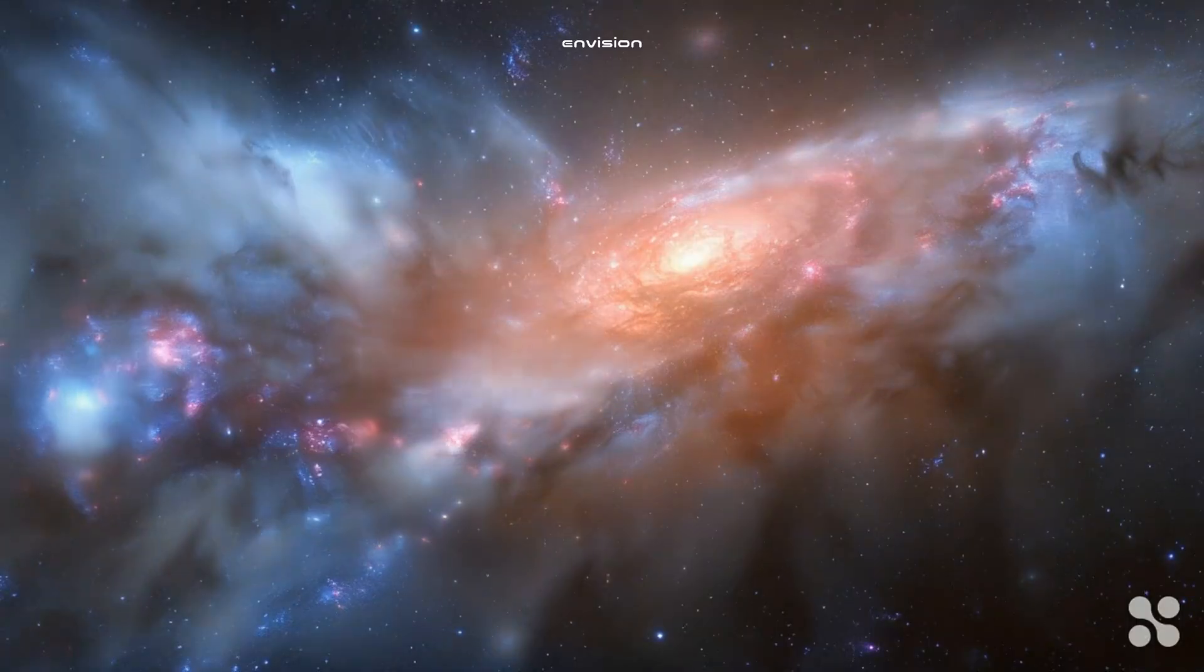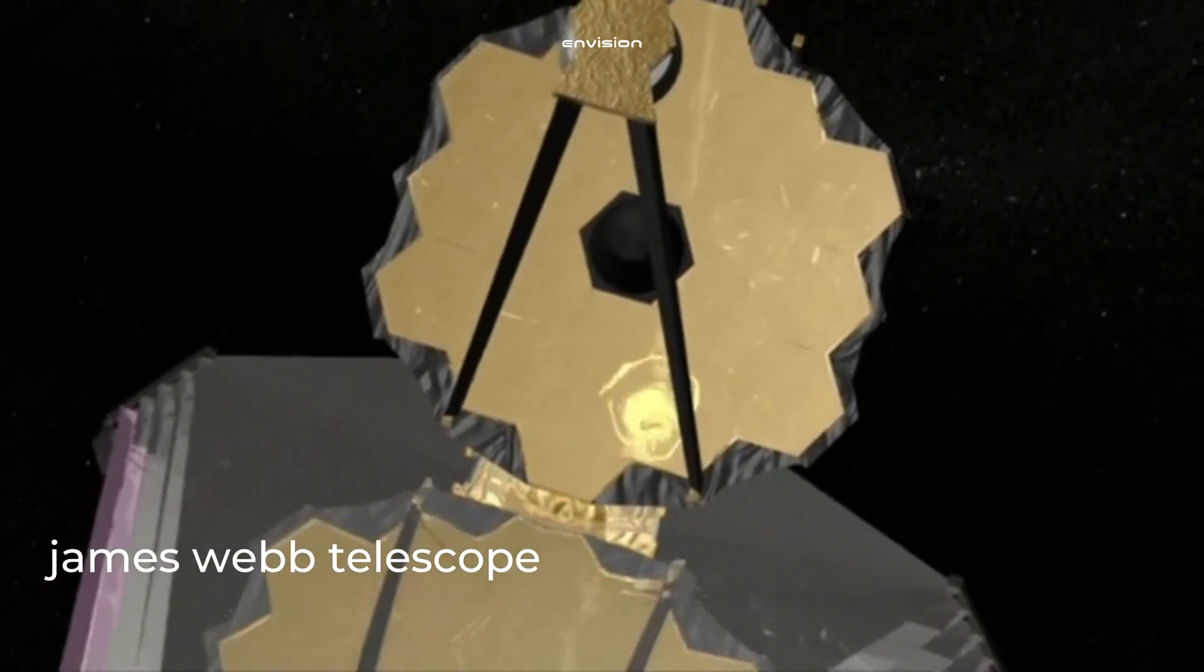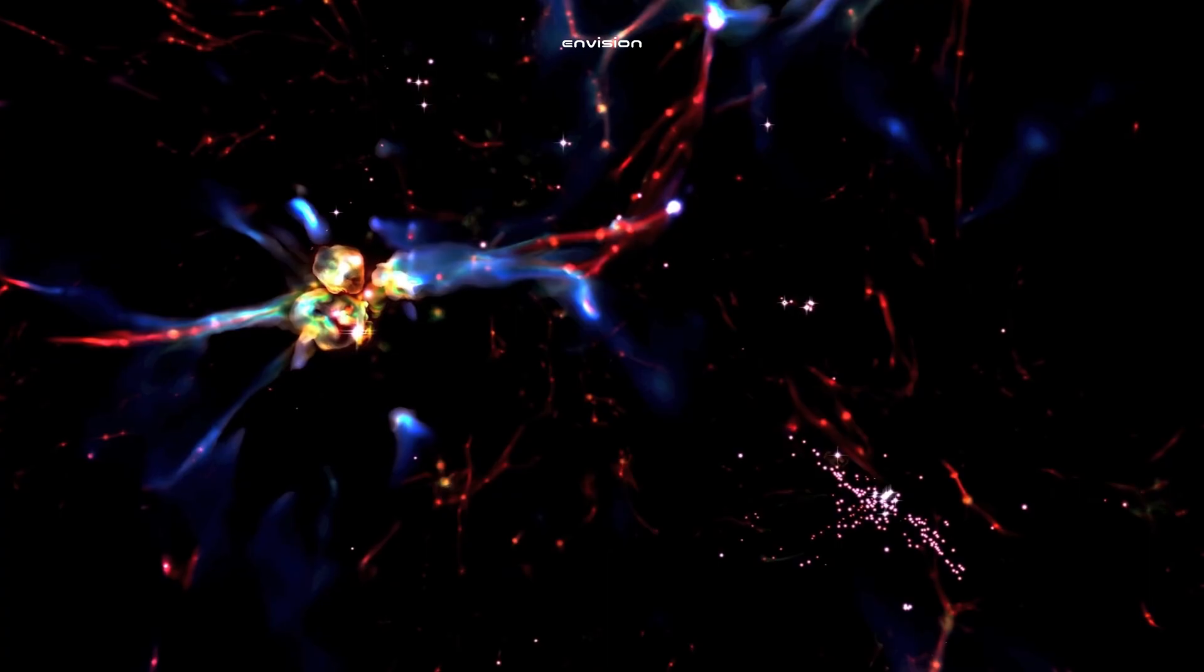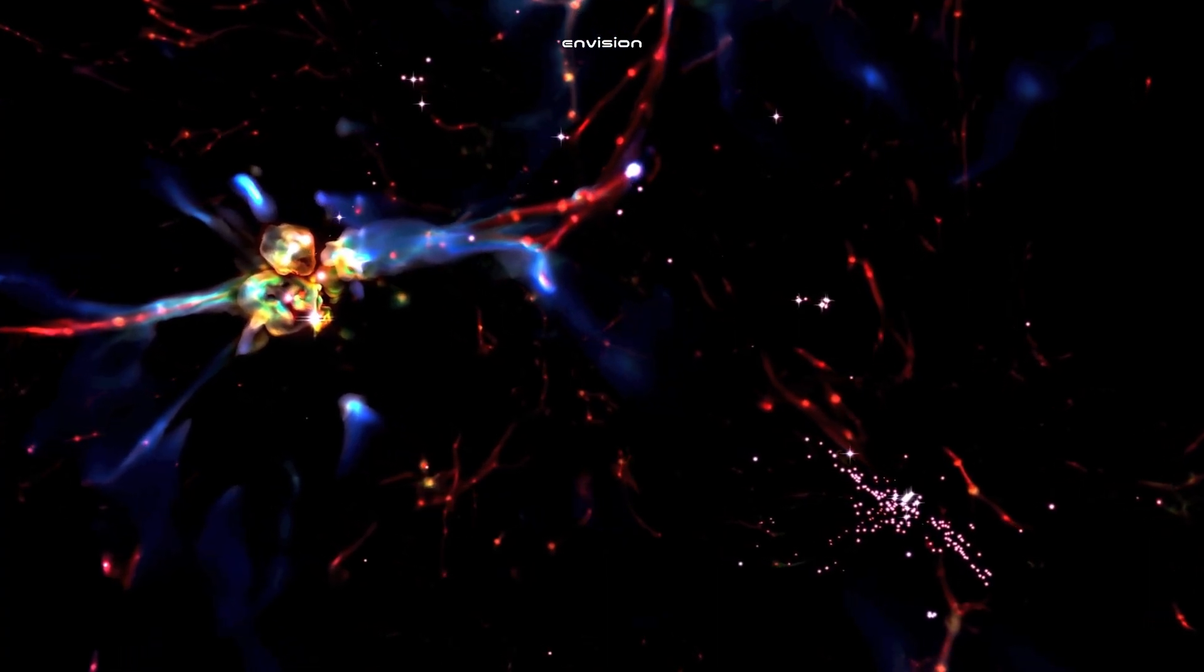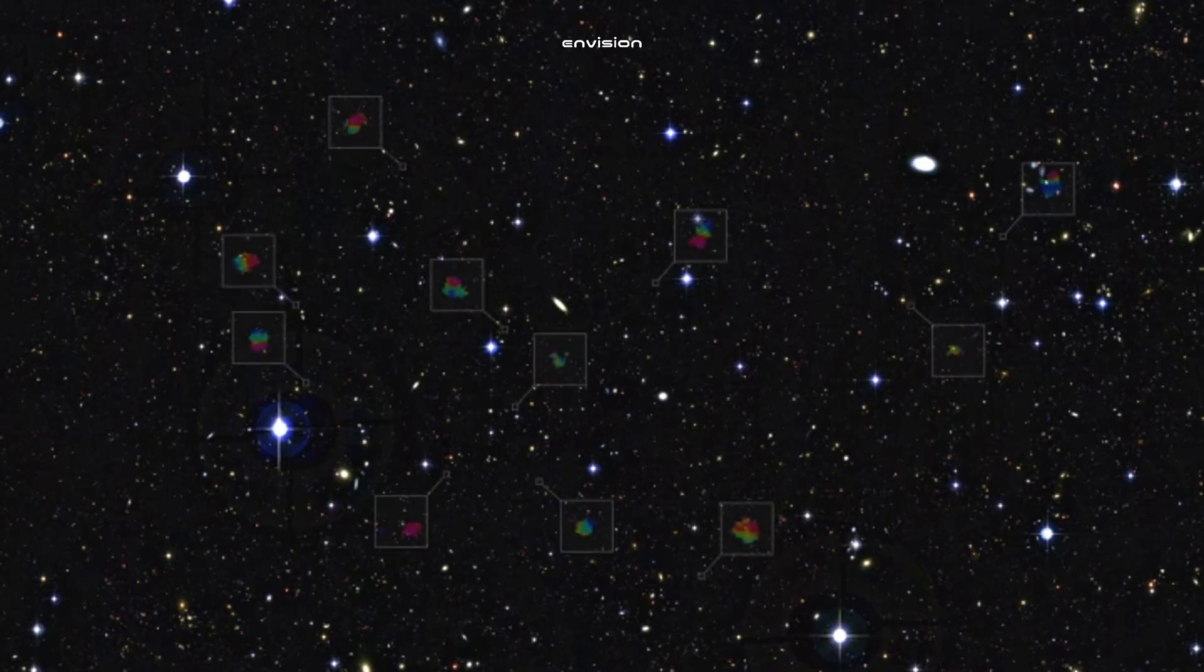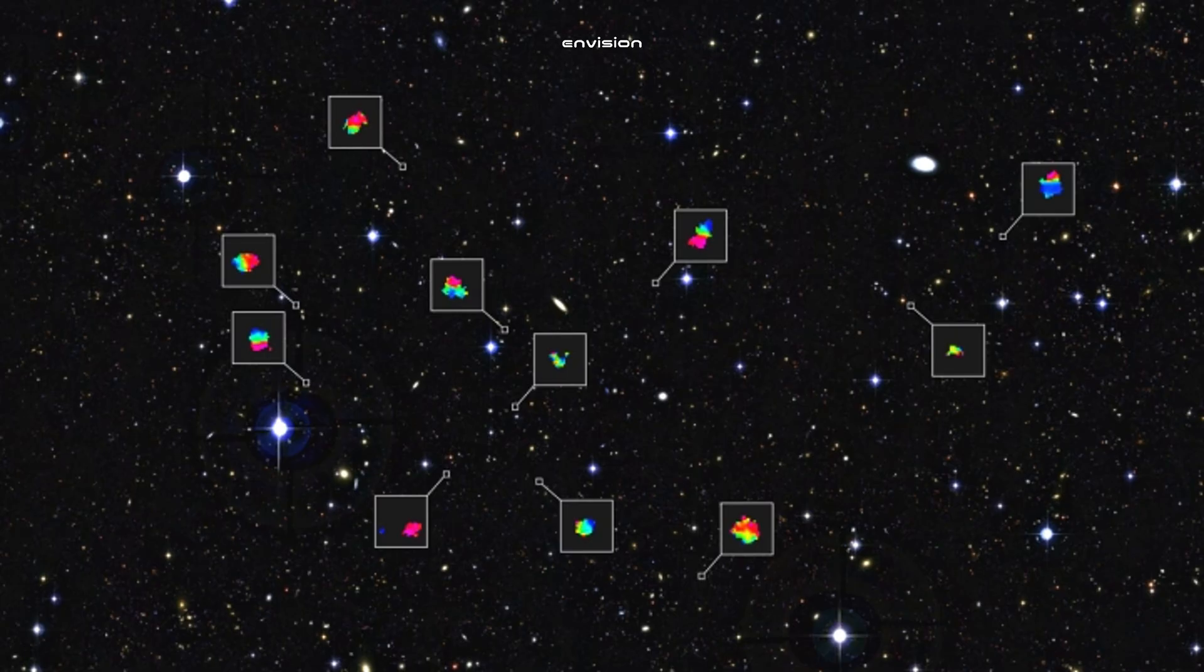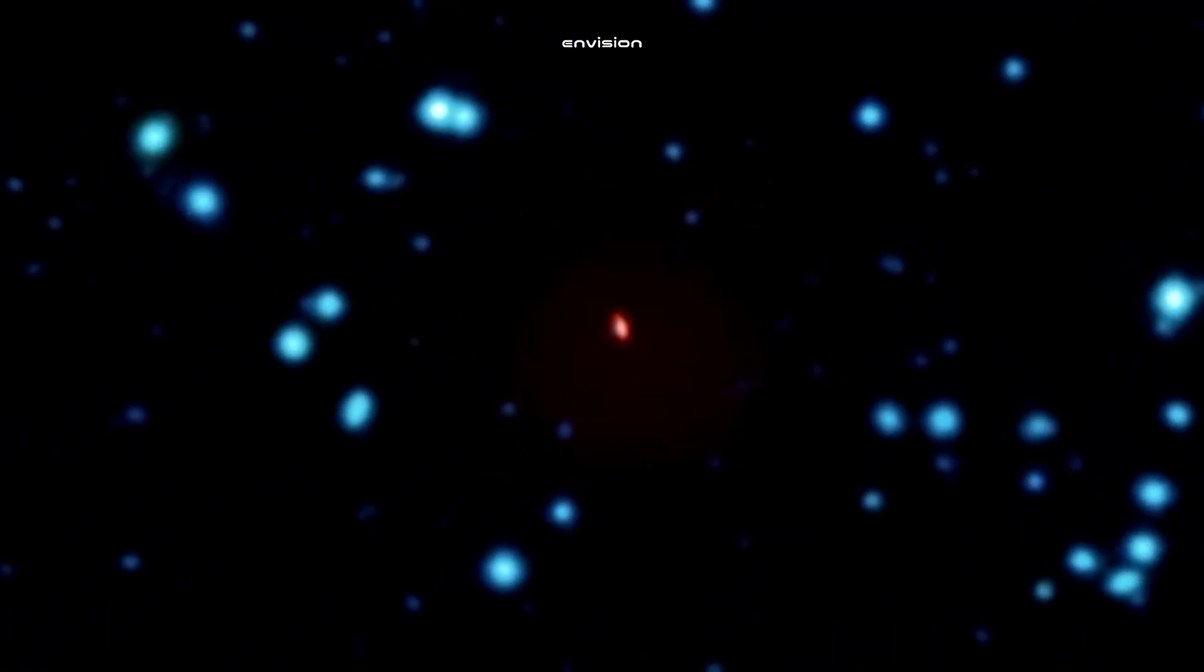With each new discovery, Webb is revealing that the cosmos may be far more complex and mysterious than we ever imagined. Recently, scientists analyzed 30,000 early galaxies detected by Webb and found something extremely strange that doesn't fit into our current understanding of cosmic evolution.